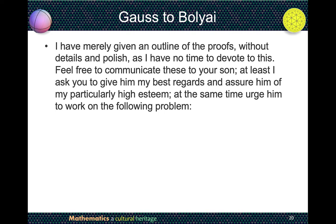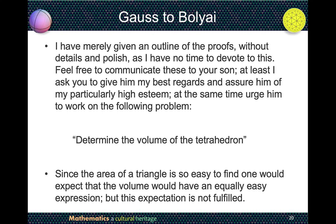Gauss then spent two and a half pages suggesting notations and sketching his own proofs of some results, saying: 'I have merely given an outline of the proof without details and polish, as I have no time. Feel free to communicate these to your son.' At the same time, Gauss urged Bolyai the son to work on the following problem: determine the volume of a tetrahedron in non-Euclidean geometry. Since the area of a triangle in non-Euclidean geometry is easy to find, one would expect the volume to have an equally easy expression — but this expectation is not fulfilled. Thus Gauss challenged Bolyai the son with this problem.